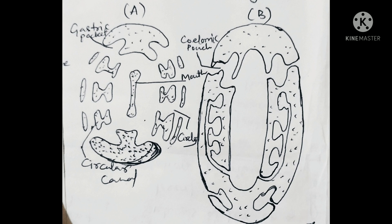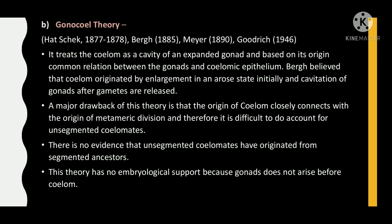This is the diagram that represents the enterocoel theory. The gonocoel theory treats the coelom as a cavity of an expanded gonad, based on the common relation between gonads and coelomic epithelium. Berg believed that the coelom originated by enlargement and cavitation of gonads after gametes are released. A major drawback of this theory is that the origin of the coelom is closely connected with the origin of metameric division, making it difficult to account for unsegmented coelomates.